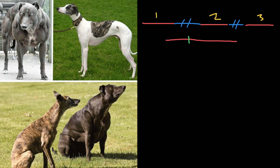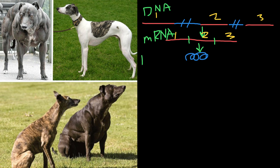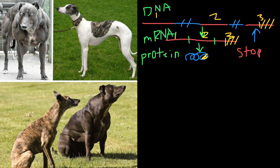We call such process transcription. And through the process of translation, this messenger RNA would be translated into the protein. So double-stranded DNA would be transcribed into the messenger RNA, and then messenger RNA would be translated into the protein. But the myostatin gene in this dog is mutated and has a mutation in exon number three. We call this a frameshift mutation, where two nucleotides are deleted, and this causes a stop codon much earlier than in the normal gene.